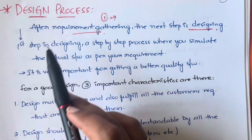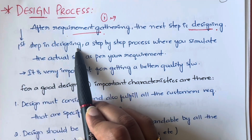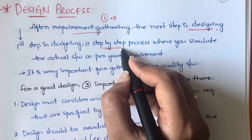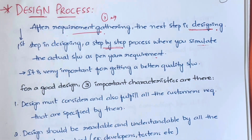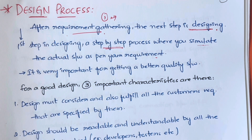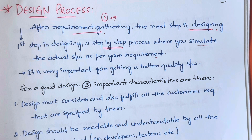The design process is the first step in designing, and it is also a step-by-step process where you can simulate the actual software as per your requirement. You basically come up with a model — simulating means replicating it, creating the same model. You create that model as per your requirements, so that if you want to make any changes, you can make them in that phase itself instead of going to the next phase and coming back.